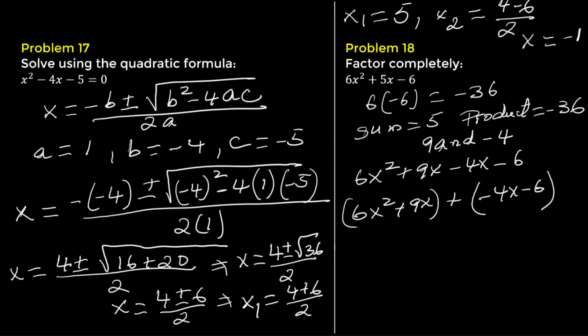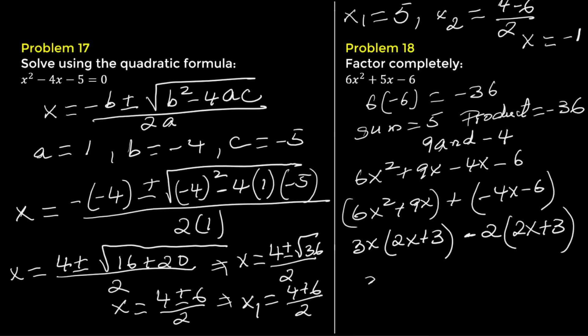Factor each group. From the first group, factor out 3x, giving 3x times 2x plus 3. From the second group, factor out negative 2, giving negative 2 times 2x plus 3. Now factor out the common factor 2x plus 3. We get 3x minus 2 times 2x plus 3. The factorization is 3x minus 2 times 2x plus 3.